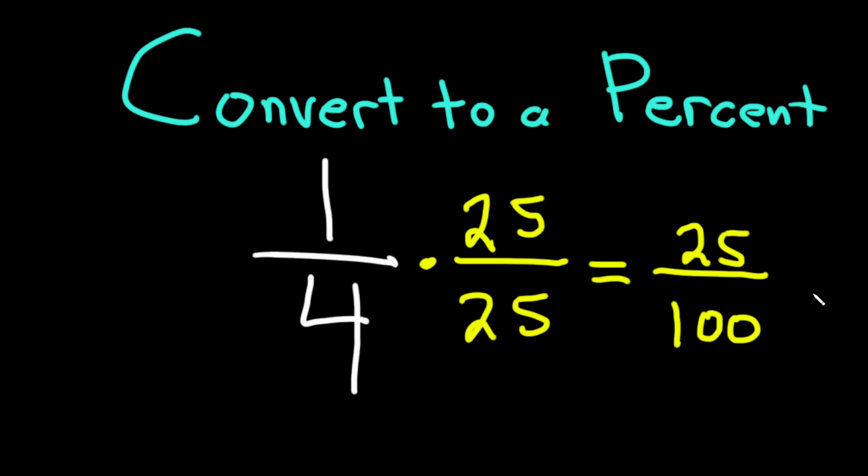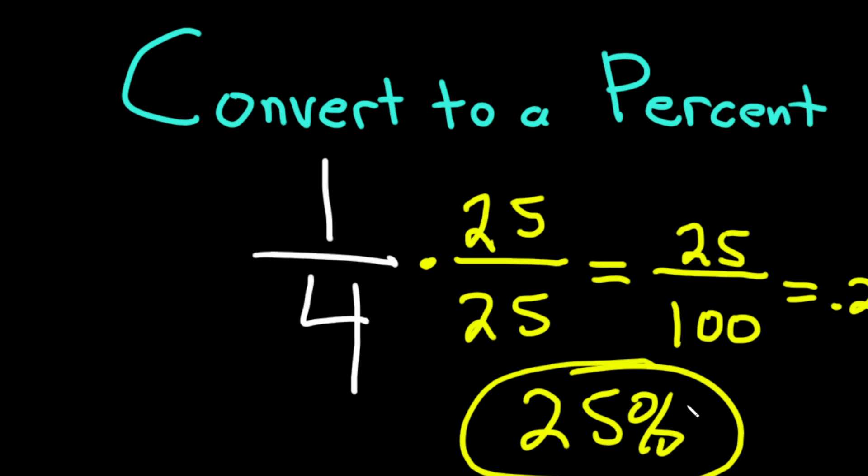But 25 over 100 is the same thing as 0.25. That's 0.25. So that's 25%, right? 0.25 is the same as 25%. You could multiply it by 100 and you would get 25%.